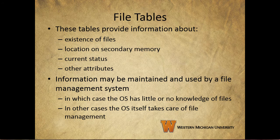File tables provide information about the existence of files, their location in secondary memory, current status, and other attributes. Much or all of this information may be maintained and used by a file management system. In that case, the operating system has little or no knowledge of files. In other cases, the operating system itself takes care of file management when there's not a file management system in place.